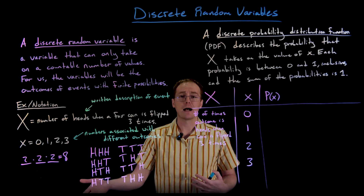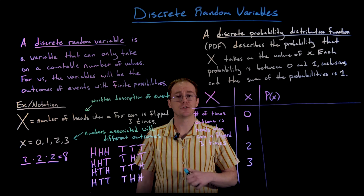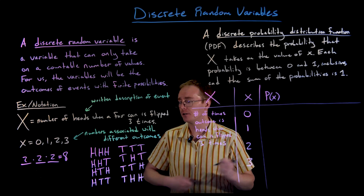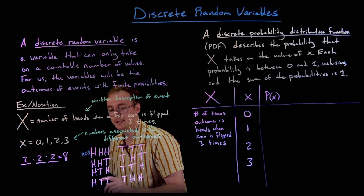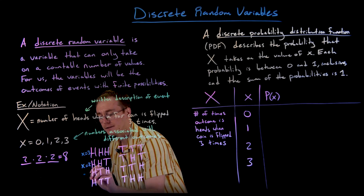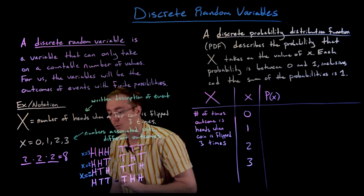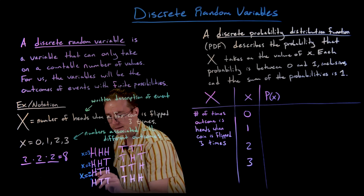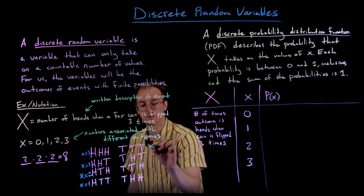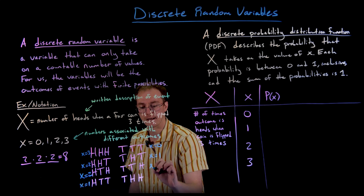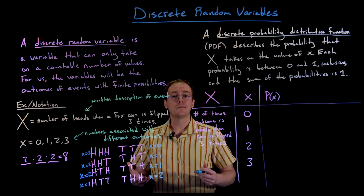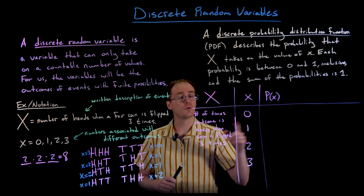Now we assign each outcome to its corresponding little x value, where little x is the number of heads. HHH gives x = 3; HHT and HTH each give x = 2; HTT gives x = 1; TTT gives x = 0; THT and TTH each give x = 1; THH gives x = 2. Now we can figure out the probability of each outcome.